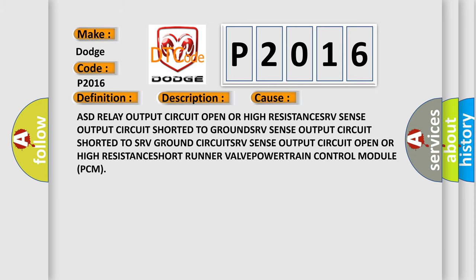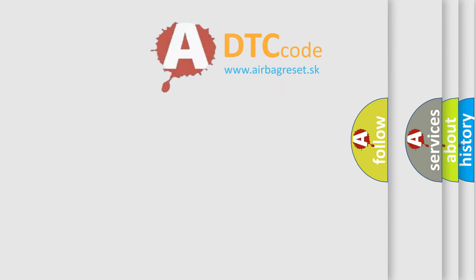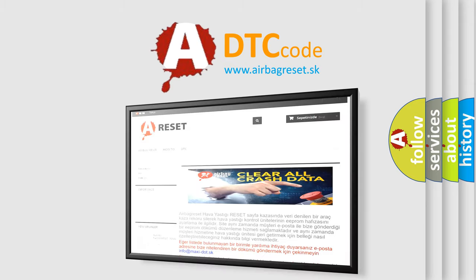This diagnostic error occurs most often in these cases: ASD relay output circuit open or high resistance; SRV sense output circuit shorted to ground; SRV sense output circuit open or high resistance; short runner valve fault; or Powertrain Control Module (PCM) fault. The Airbag Reset website aims to provide information in 52 languages. Thank you for your attention.